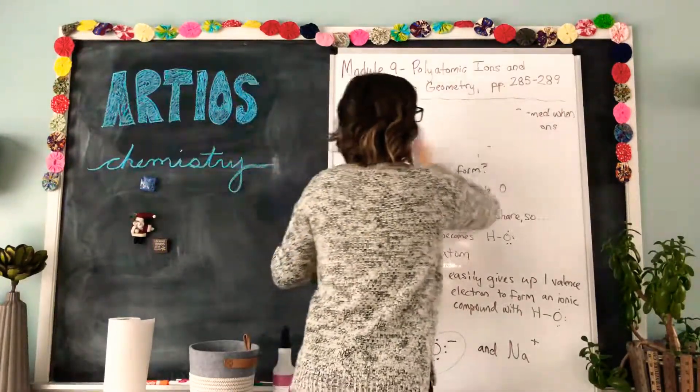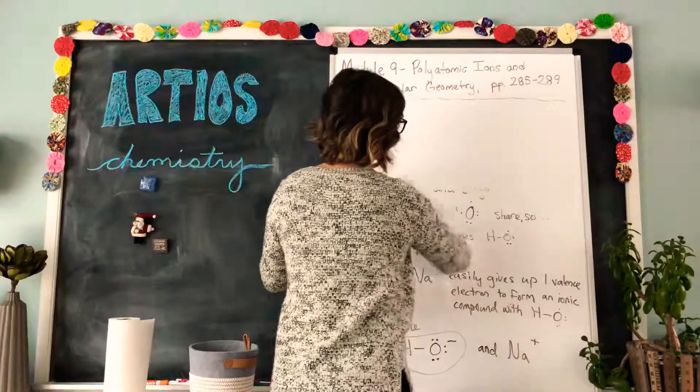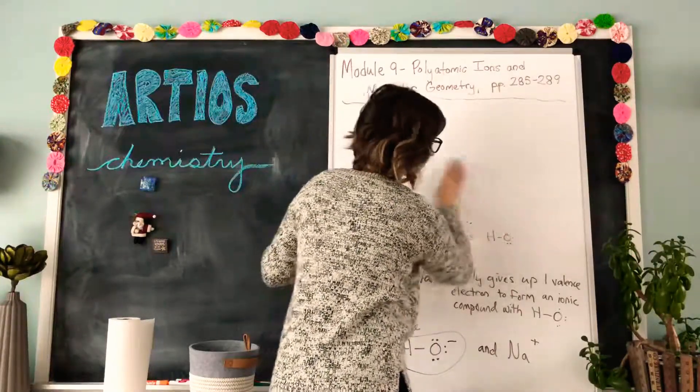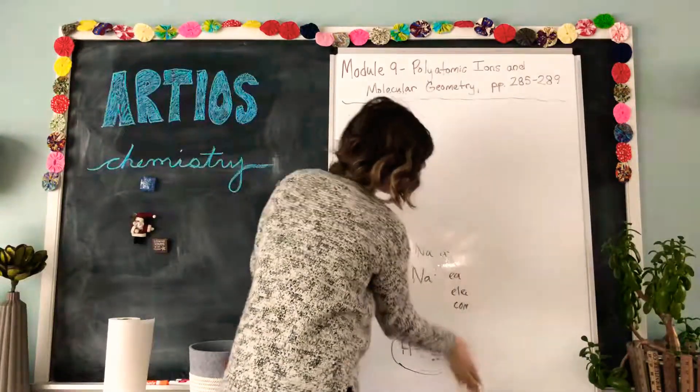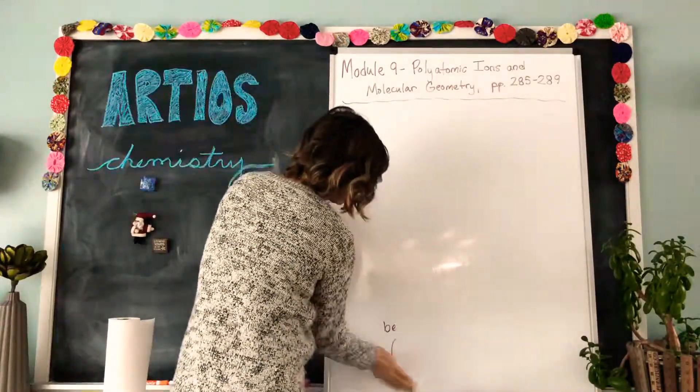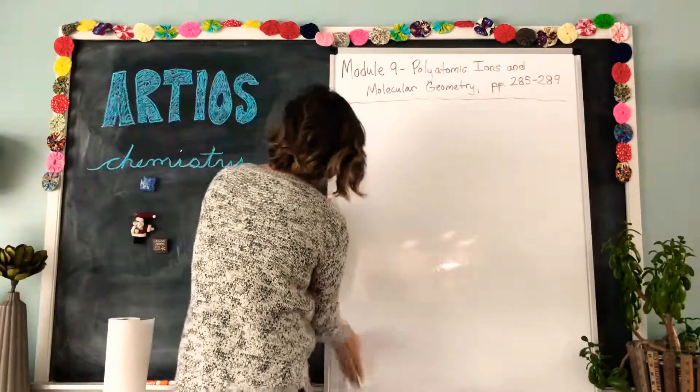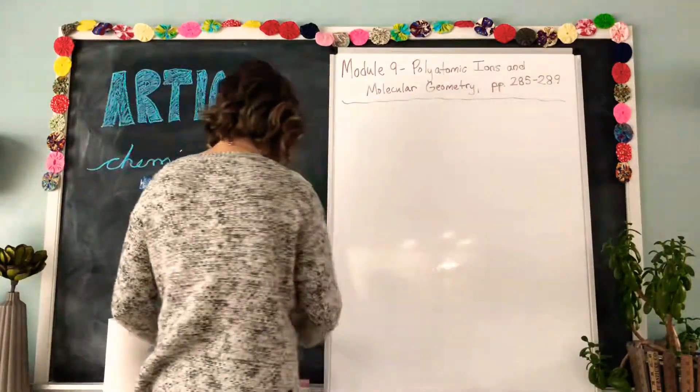So you can see in table 9.1 of your book that there are several important polyatomic ions. They're important just because they occur fairly regularly, and so you need to get to know them and you need to know their charges.